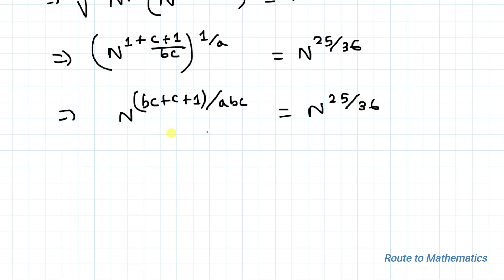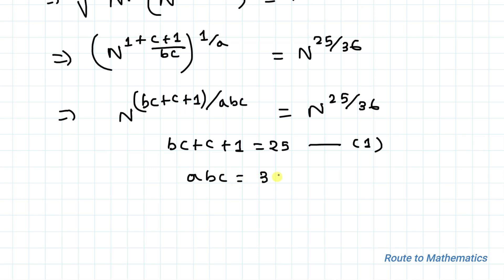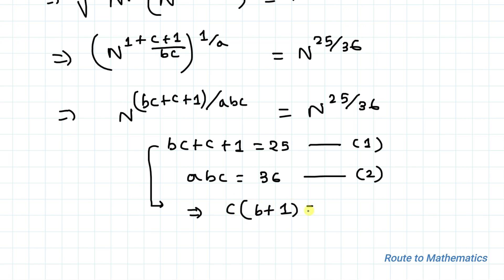Now we can see that both sides have the same base n. By comparing the exponents, we can write: bc plus c plus 1 equals 25 — let's call this equation 1 — and abc equals 36 — let's call this equation 2. From equation 1, taking 1 to the left-hand side and factoring out c, we get c multiplied by (b plus 1) equals 24. Let's call this equation 3.